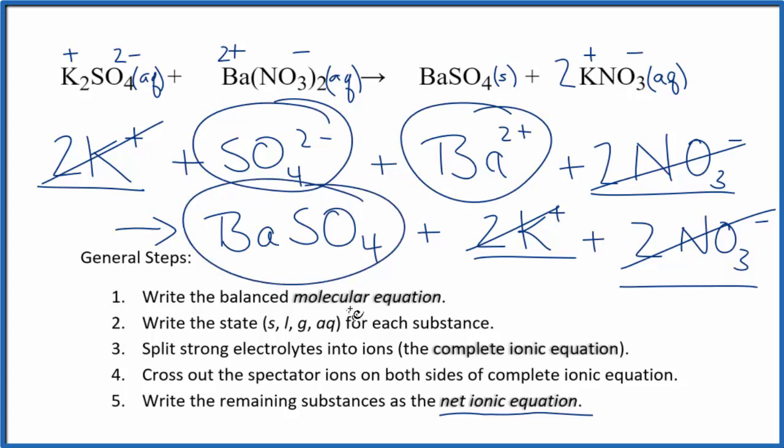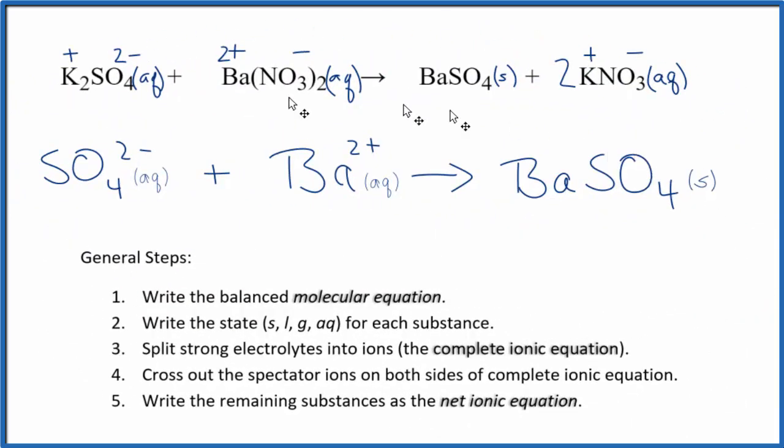So let me clean this up, write the states in, and then we'll have a nicely formatted net ionic equation for K2SO4 plus Ba(NO3)2. So this is the complete net ionic equation for K2SO4 plus Ba(NO3)2, potassium sulfate and barium nitrate.